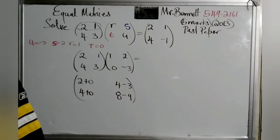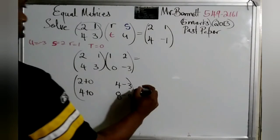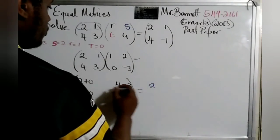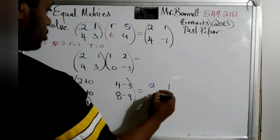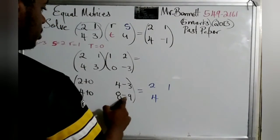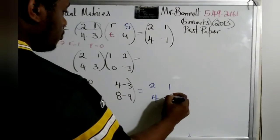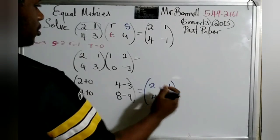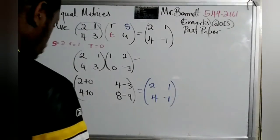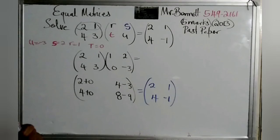Let us compute now. 2 plus 0 is 2, 4 minus 3 is 1. 4 plus 0 is 4, and 8 minus 9 would be negative 1. So there you have it guys. It is indeed correct. See you guys in the next video. Remember guys to share so other people can get help. I'm out.